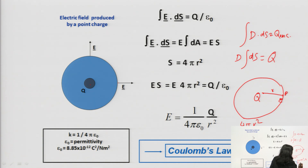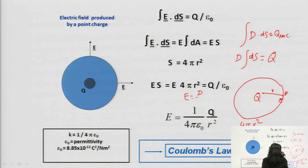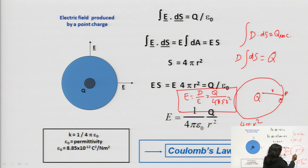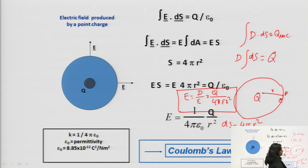So D will be equal to Q divided by 4πr². Since D equals epsilon times E, we know that E equals D by epsilon, so E equals Q divided by 4π epsilon r². This is the same value which we have obtained in previous classes using Coulomb's law.